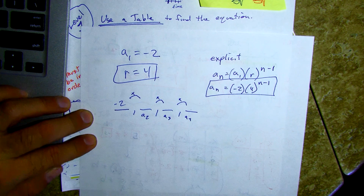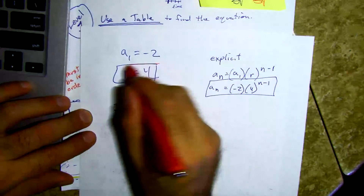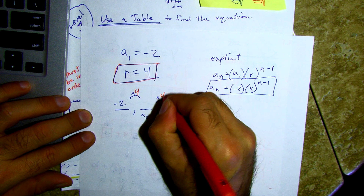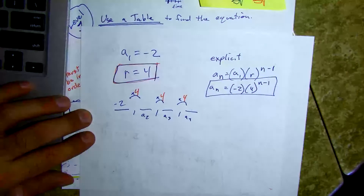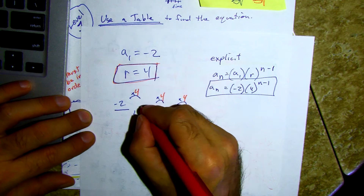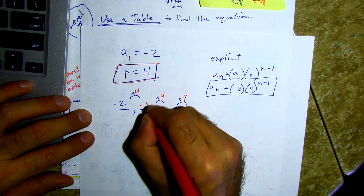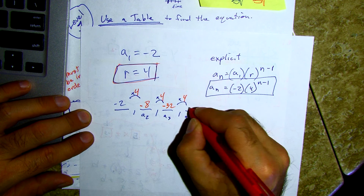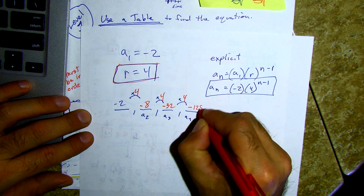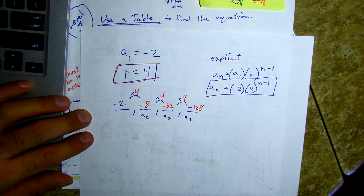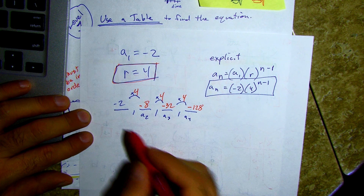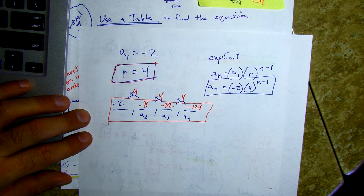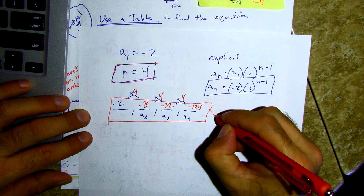Jackman says negative eight — that sounds good to me. Negative thirty-two sounds good. Negative one-twenty-eight — all negatives, because we only multiply by a positive so the sign didn't change. So here are the terms that were requested and my explicit formula.